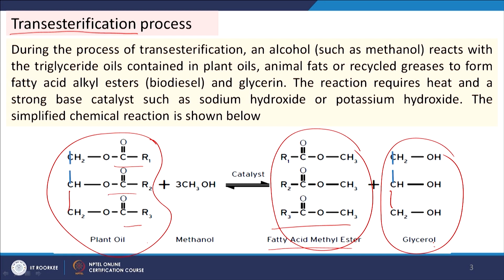So triglyceride is converted to fatty acid methyl esters and glycerol — this process is called transesterification. The R1-COO group is separated and combined with CH3 to give R1-COO-CH3; similarly R2-COO-CH3 and R3-COO-CH3 are formed. These are the different compounds composing biodiesel, collectively called fatty acid methyl esters, and this is the transesterification process.